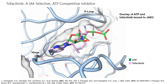This is an overlay of tofacitinib and ATP in the binding site. You can see why the pyrrolopyrimidine was a very important finding — it allows tofacitinib to sit in the hinge. The overlay shows that tofacitinib occupies the site without ATP, yet does not destroy the enzyme. It is a reversible competitive inhibitor.